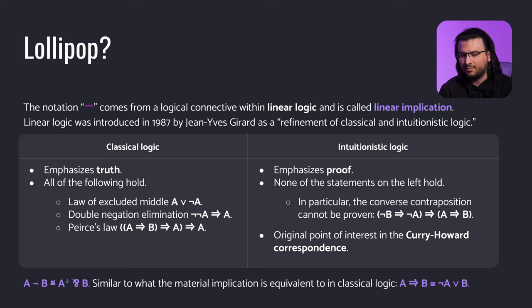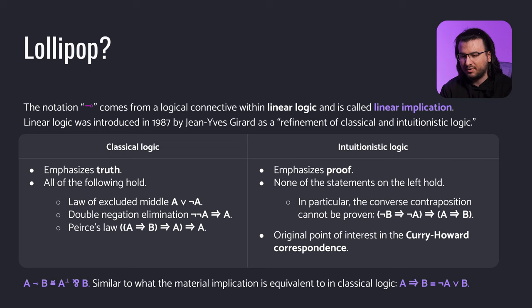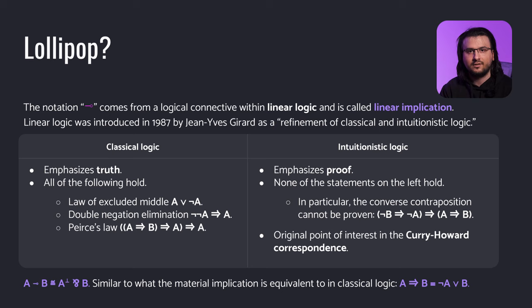If this law seems familiar, that's probably because it encodes a widely used method of proof called proof by contradiction, or indirect proof. Intuitionistic logic is also called constructive exactly because of the inability to use proof by contradiction. Also, the beloved Curry-Howard isomorphism — the relationship between formal mathematical statements and types, and between proofs of those statements and terms of those types — originally concerned intuitionistic logic.